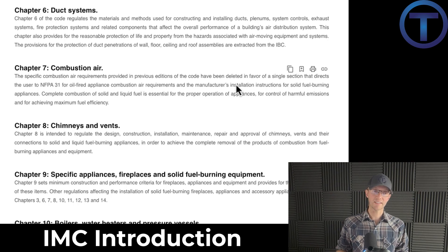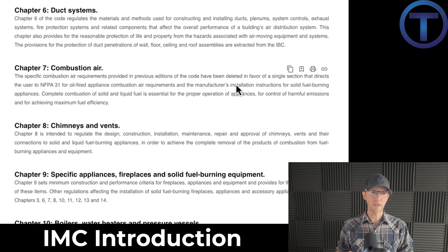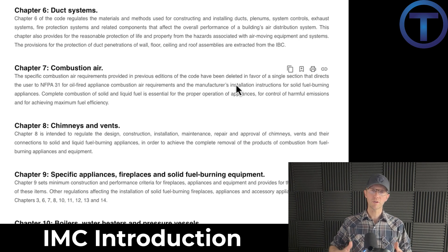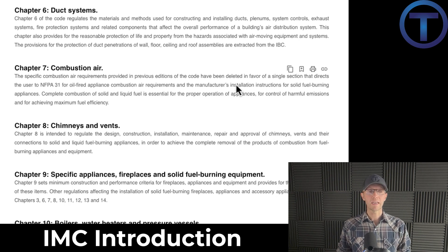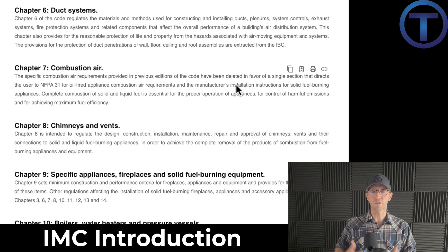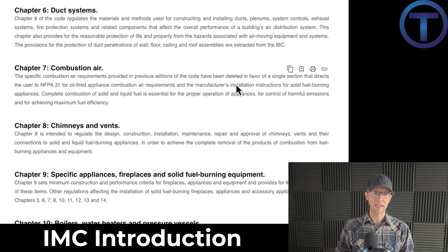Chapter six is duct systems — all that forced-air stuff — and that's totally HVAC. All of those requirements are listed in chapter six and we're not going to study that in our curriculum. But chapter seven is on combustion air, and so long as plumbers are involved with the installation of gas appliances, you need to know about combustion air. When you get to chapter seven you find there's really not much to it — it just tells you to go look somewhere else. But please keep in mind that as a plumber, it's important for you to understand combustion air: fresh air that comes in that can be burned when you have a gas appliance.